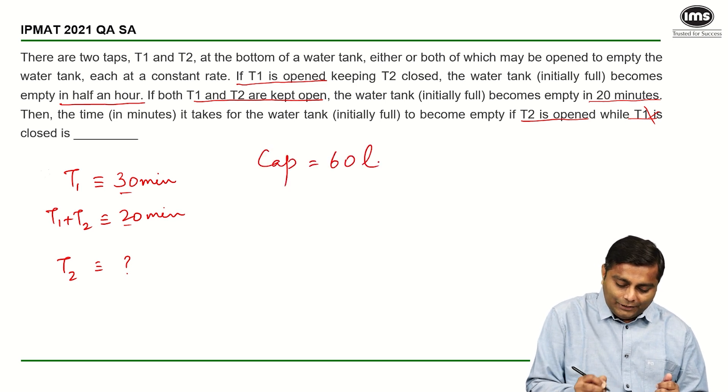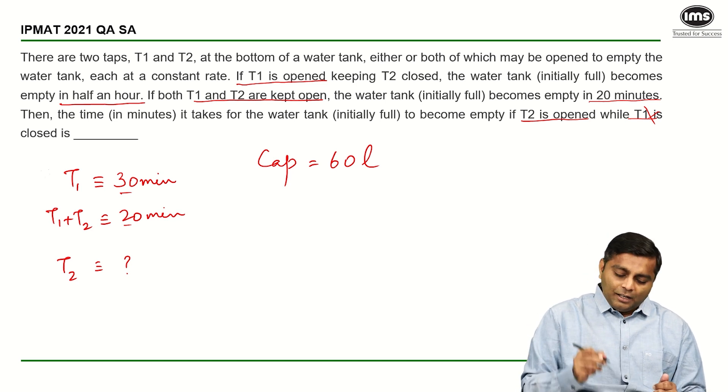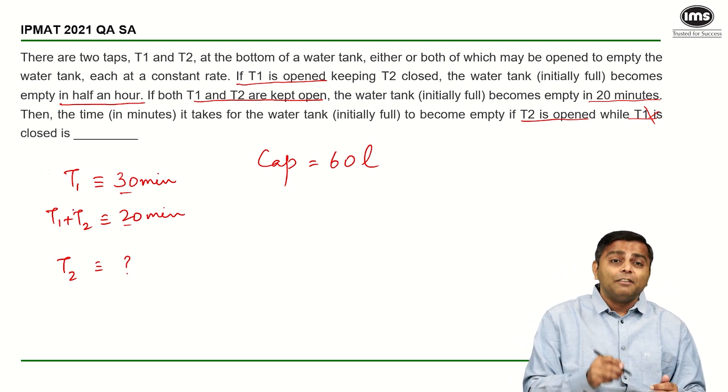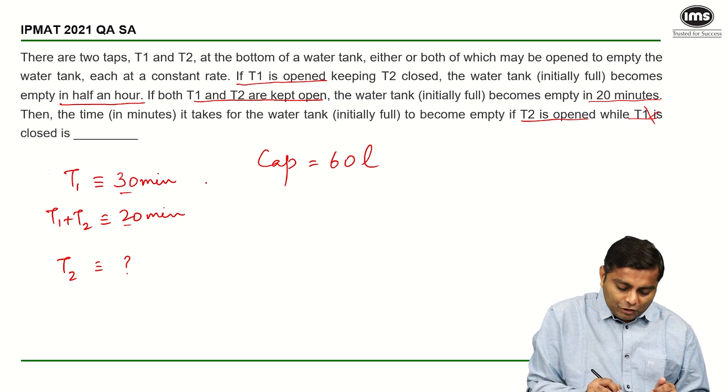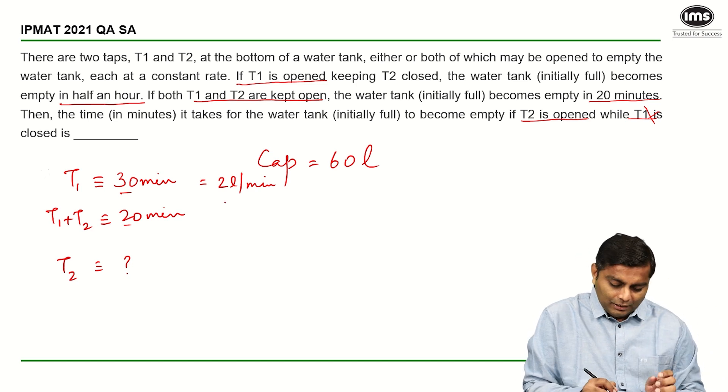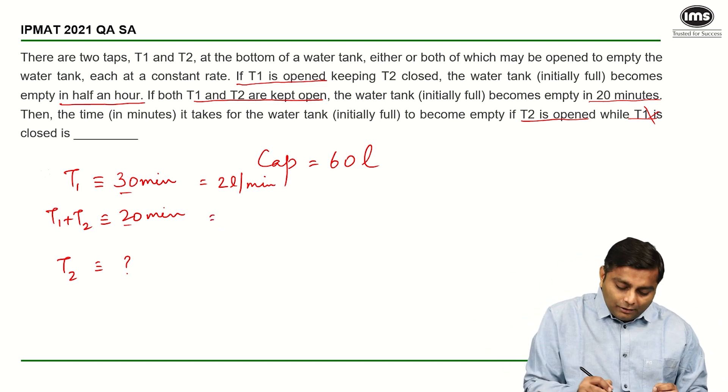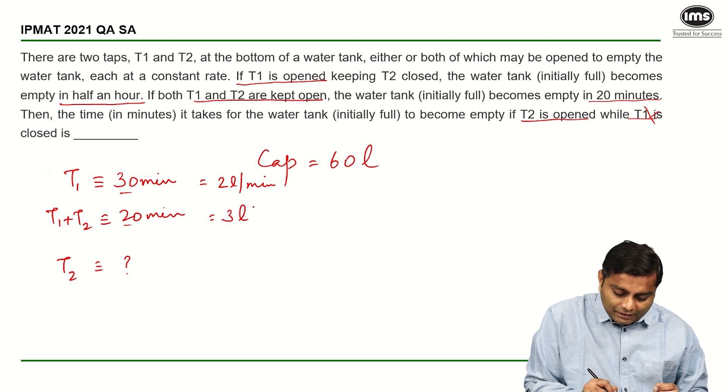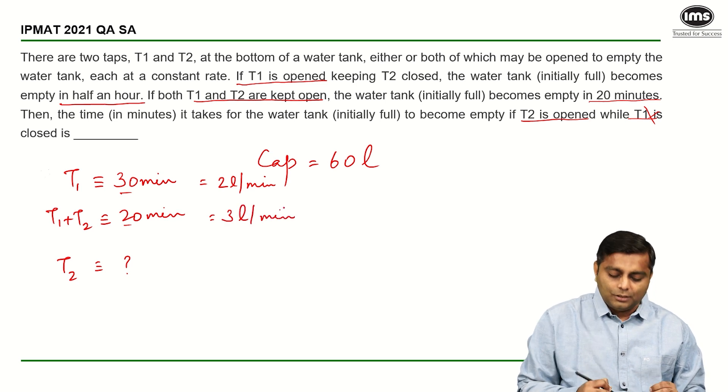If it is a 60 liter tank and T1 takes 30 minutes to empty, which means T1 does the work of 2 liters per minute. T1 and T2 together empty the tank in 20, which means they work at the rate of 3 liters per minute.